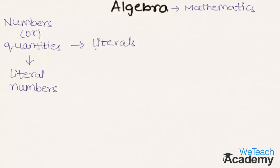The literals which can take any value are called variables, and the literals which have constant values are called constants.